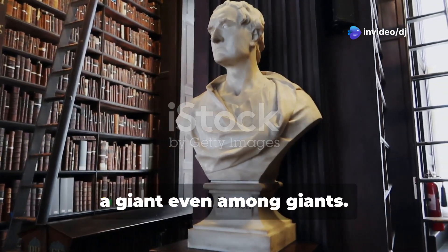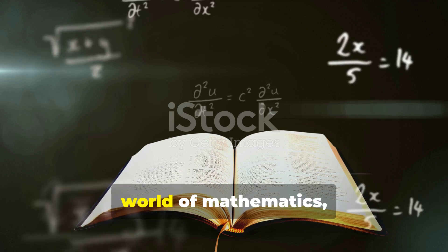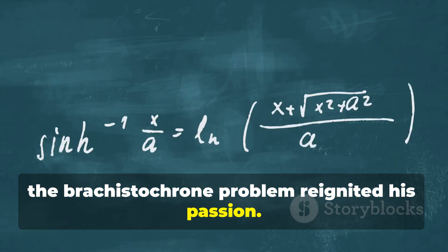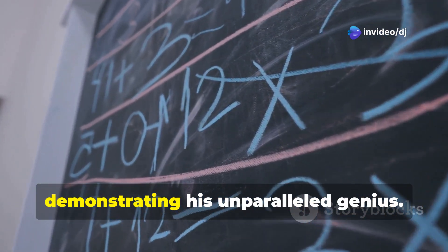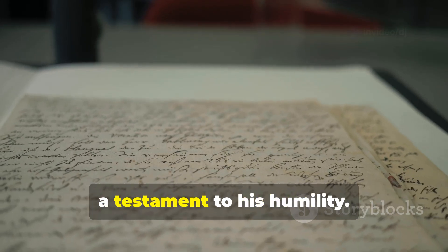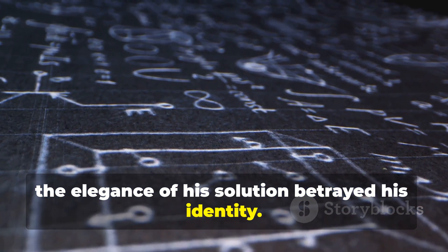Enter Isaac Newton, a giant even among giants. Though he had seemingly moved on from the world of mathematics, the Brachistochrone problem reignited his passion. In a single night, he effortlessly solved the puzzle, demonstrating his unparalleled genius. He chose to submit his answer anonymously, a testament to his humility.